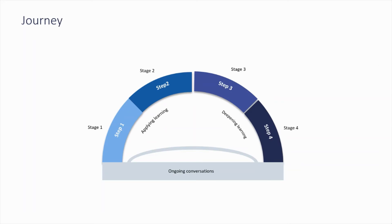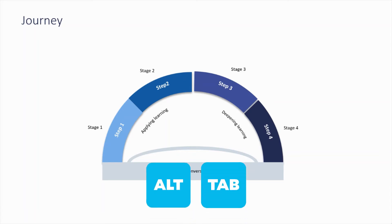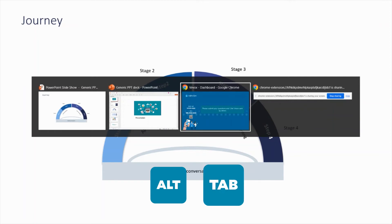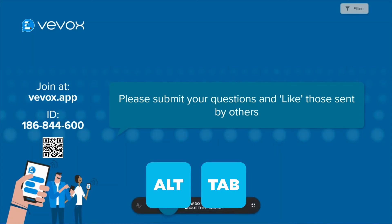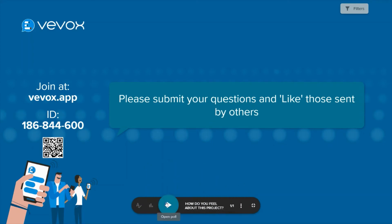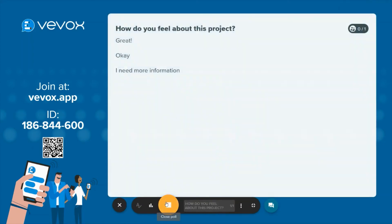Let's say at this point in the presentation I wanted to run a VVox poll through the VVox present view. All I have to do is hold down alt on my keypad and tab over to the VVox present view. I can then go ahead and run my polling questions as I normally would and get the answers from my audience.